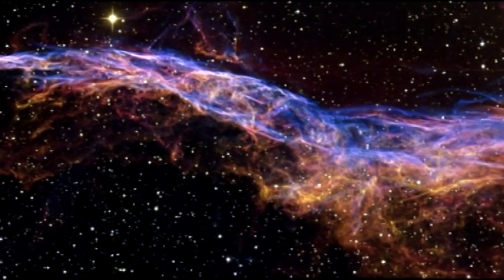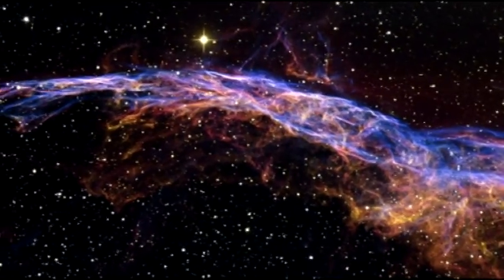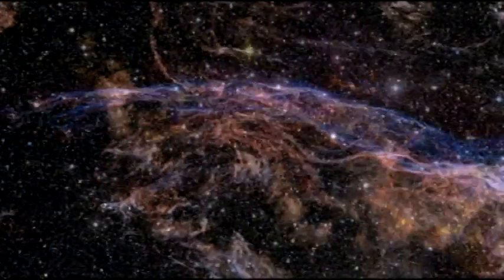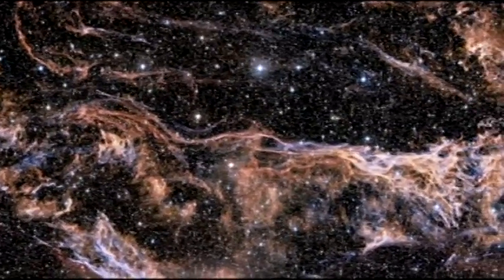The intertwined rope-like filaments of gas in the Veil Nebula result from the enormous energy released as the fast-moving debris from the supernova explosion ploughs into the surroundings and creates a shock front.